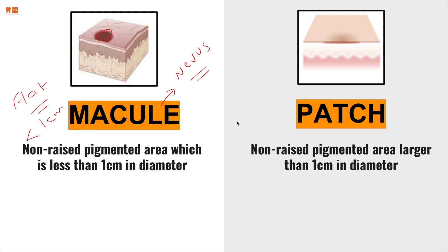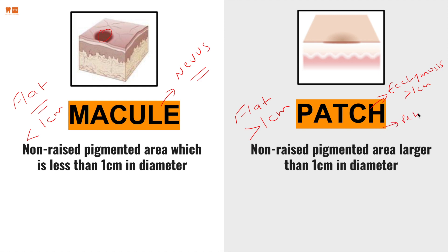A patch — what's a patch? Non-raised, so still flat. Pigmented, absolutely. However, it is something that is more than 1 cm. An example is when you bleed under your tissue, your ecchymosis is generally pretty big. Now the counterpart: as ecchymosis is more than 1 cm, petechiae are less than 1 cm. So you're looking at flat surfaces, pigmented, very important to classify, and then dimension — horizontal dimension, vertical dimension, and a clinical feature. That's how we'll look at all our oral pathology lesions.